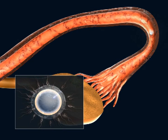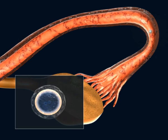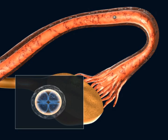One day following fertilization, a cell with two nuclei is observed, at which point it is called an embryo, and it begins to divide itself. Two days after fertilization, the embryo is made up of two to four cells, and moves along the tube in the direction of the uterus.